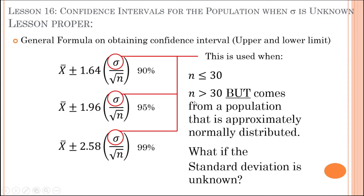This formula is also used when the total number of samples is greater than 30, but take note — this is only valid when n is greater than 30 from a population that is approximately normally distributed. If the population is not approximately normally distributed, we cannot use this formula.